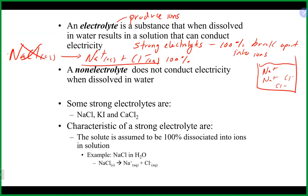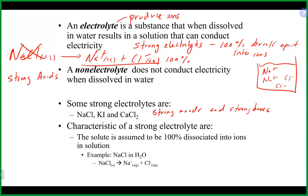Most ionic compounds are strong electrolytes, which means when they dissolve you can expect them to completely break apart into their ions. Acids and bases are also strong electrolytes. A really good list to know is the six strong acids: hydrochloric acid, nitric acid, sulfuric acid, perchloric acid, hydrobromic acid, and hydroiodic acid. Commit that list to memory — if you can identify something as an acid and it's not one of those six, it's probably a weak acid.